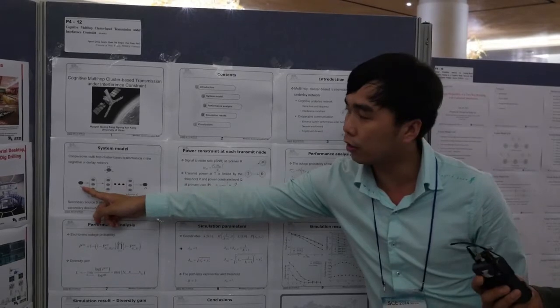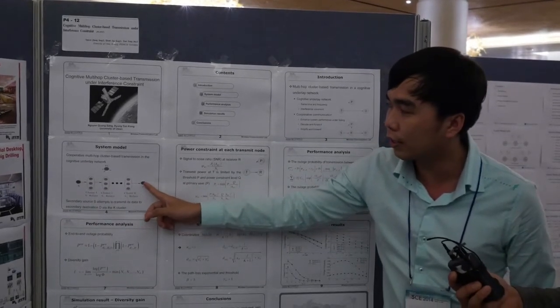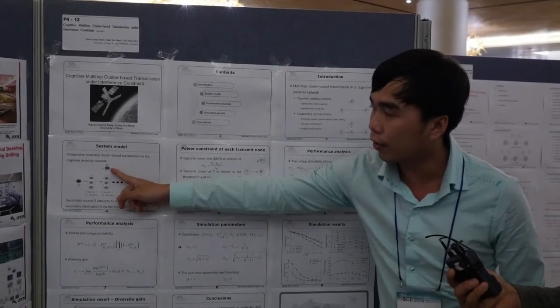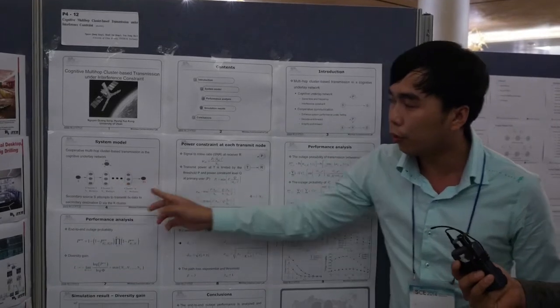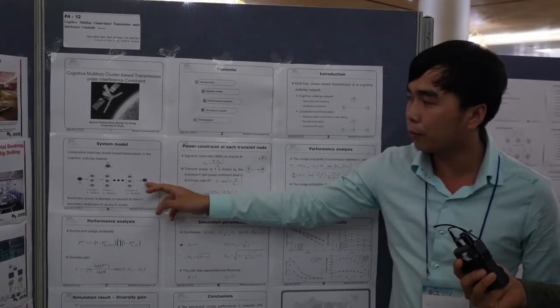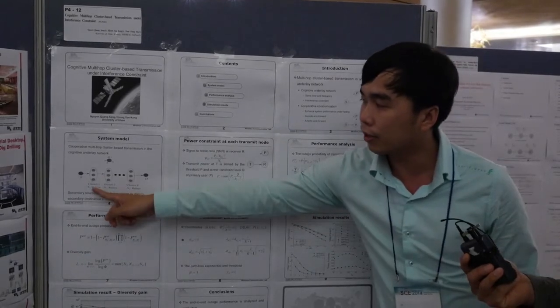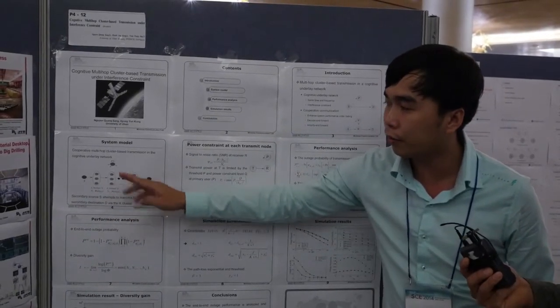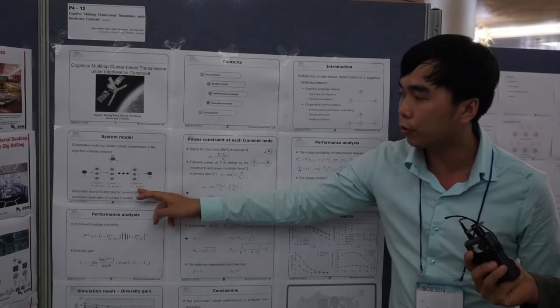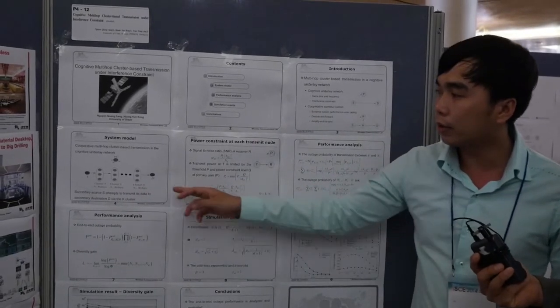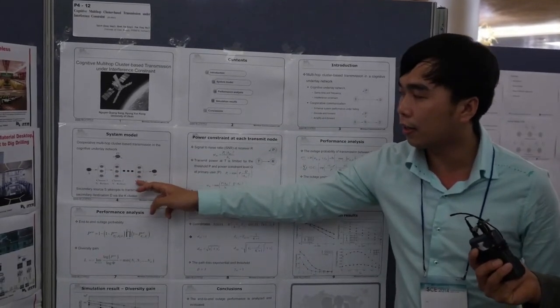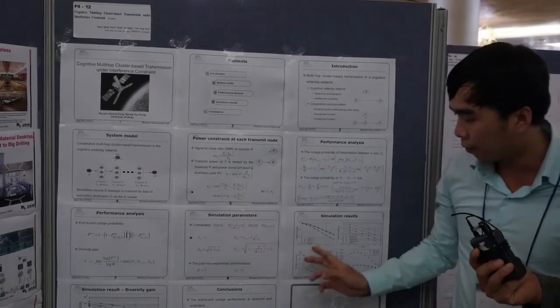First, the secondary source wants to transmit to the secondary destination under the direction of primary users. To improve the performance of this system, we use a lot of N clusters. One cluster includes N relays, N2 and K relays. With N clusters in the system, we improve the performance.